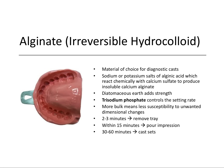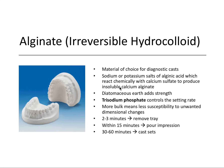Casts are basically molds of your teeth. Alginate is made up of several components: sodium or potassium salts of alginic acid, which react chemically with calcium sulfate to produce insoluble calcium alginate. There's a component in the alginate powder called diatomaceous earth, which adds strength to the impression material. Trisodium phosphate controls the setting reaction — that's probably the only compound I would commit to memory for the board exam.